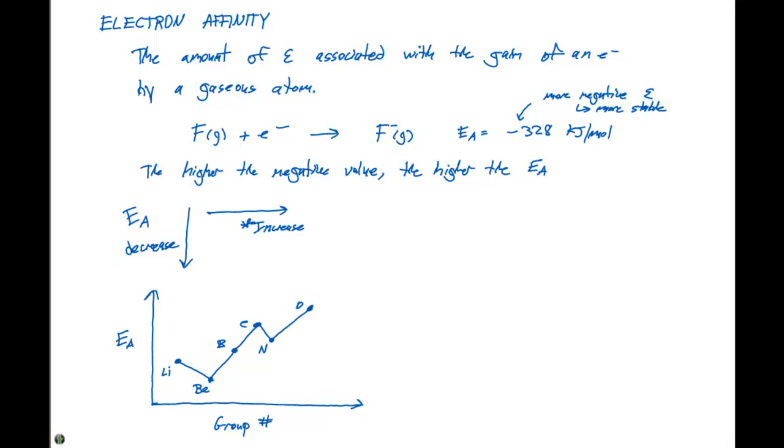Then oxygen and fluorine are going to be pretty high because they really want an electron. Remember, each of these species is trying to achieve an octet.